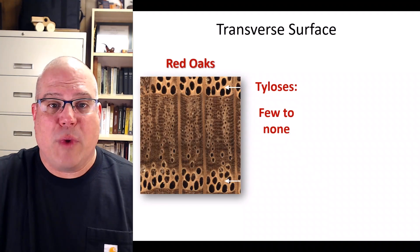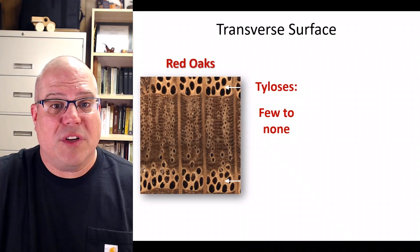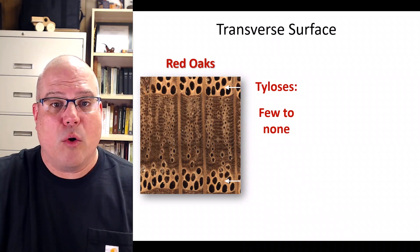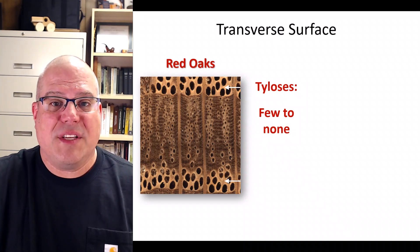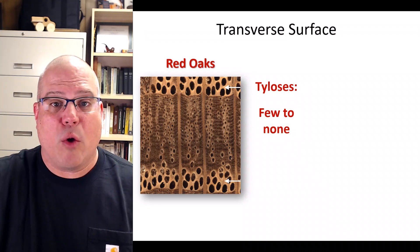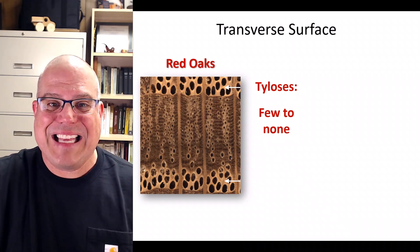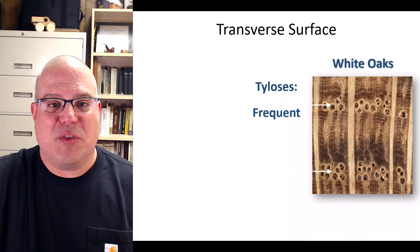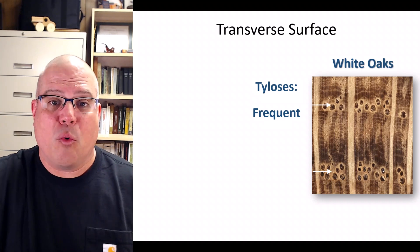Last but not least, we have tyloses. Red oak has few to no tyloses, which is why you'll seldom see red oak used for wine barrels — tyloses keep wine from seeping through the vessels, and red oak has very few, so those barrels tend to leak. White oak, on the other hand, has lots of tyloses, so it makes sense why white oak is the wood of choice for wine barrels.